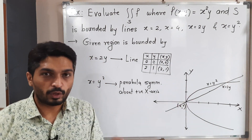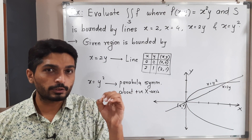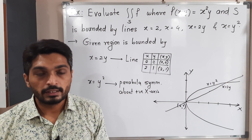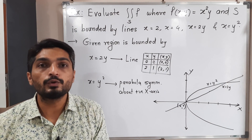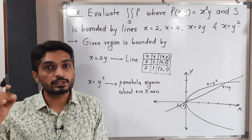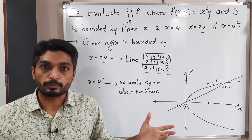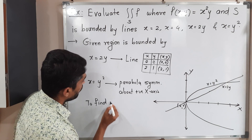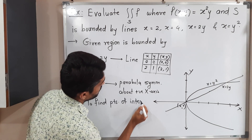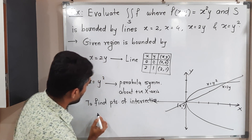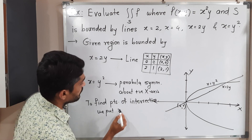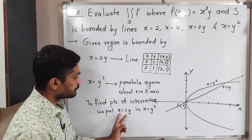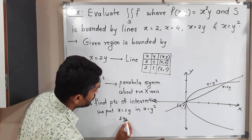You can easily see that the line and parabola intersect at some point. We are interested to find that point of intersection — it is very important for finding the limits of double integration. To find points of intersection, we put the equation of one curve into the second curve. We put x equal to 2y into x equal to y². So therefore 2y is equal to y².